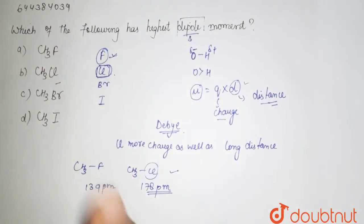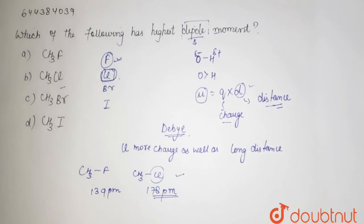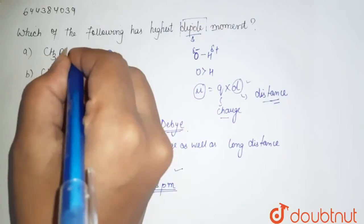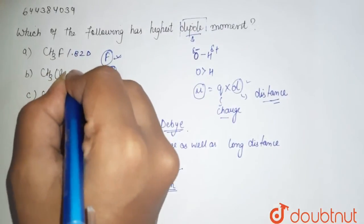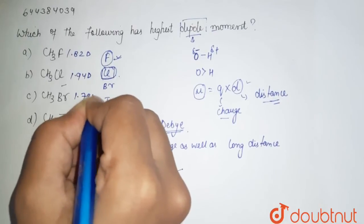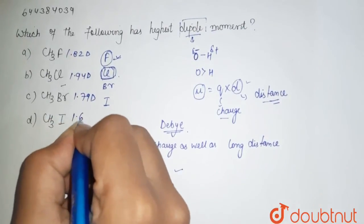If I talk about the dipole moment of all these, it is like this. CS3F is 1.82 Debye and CS3Cl is 1.94 Debye. CS3Br is 1.97 Debye and CS3I is 1.64 Debye.